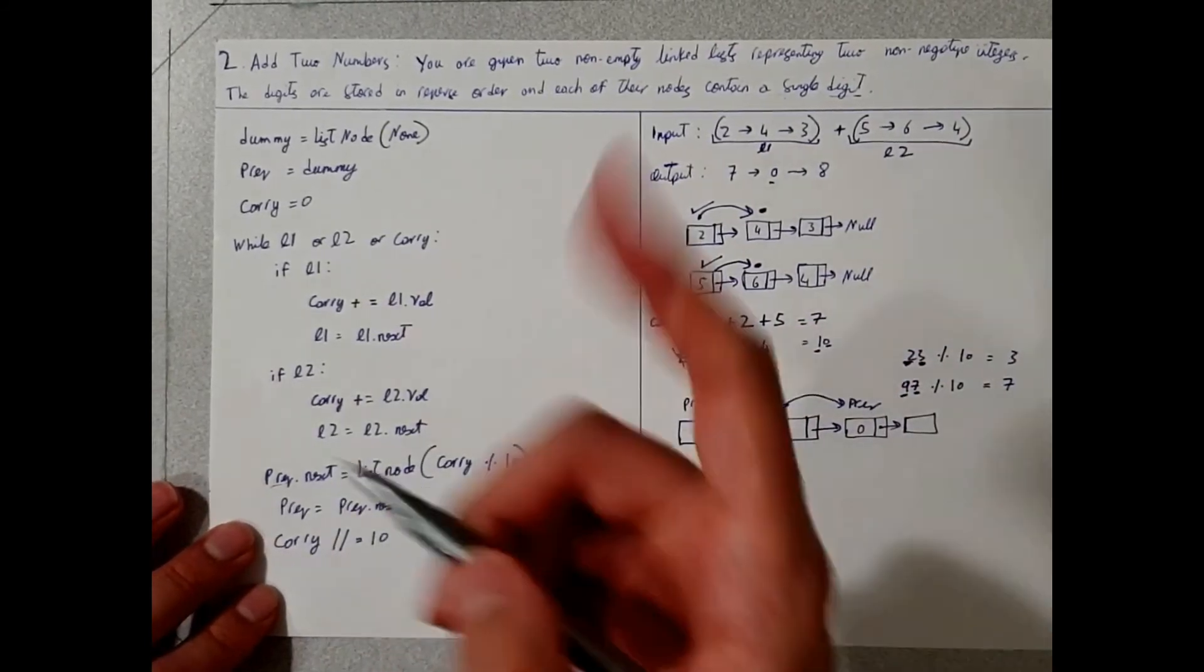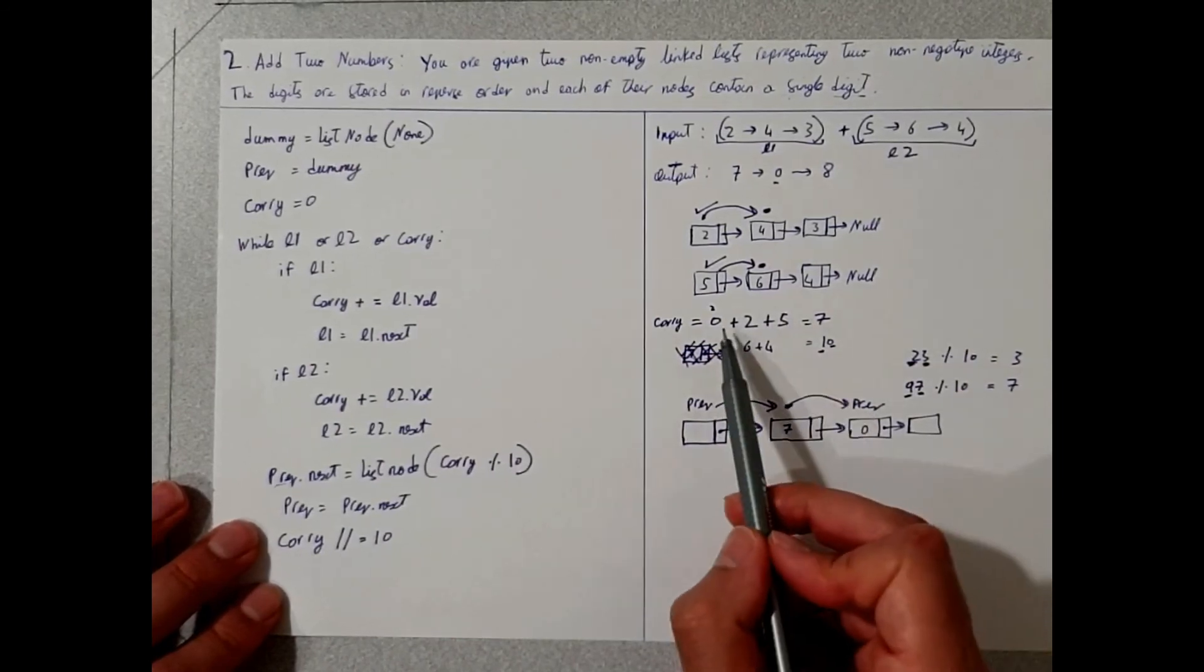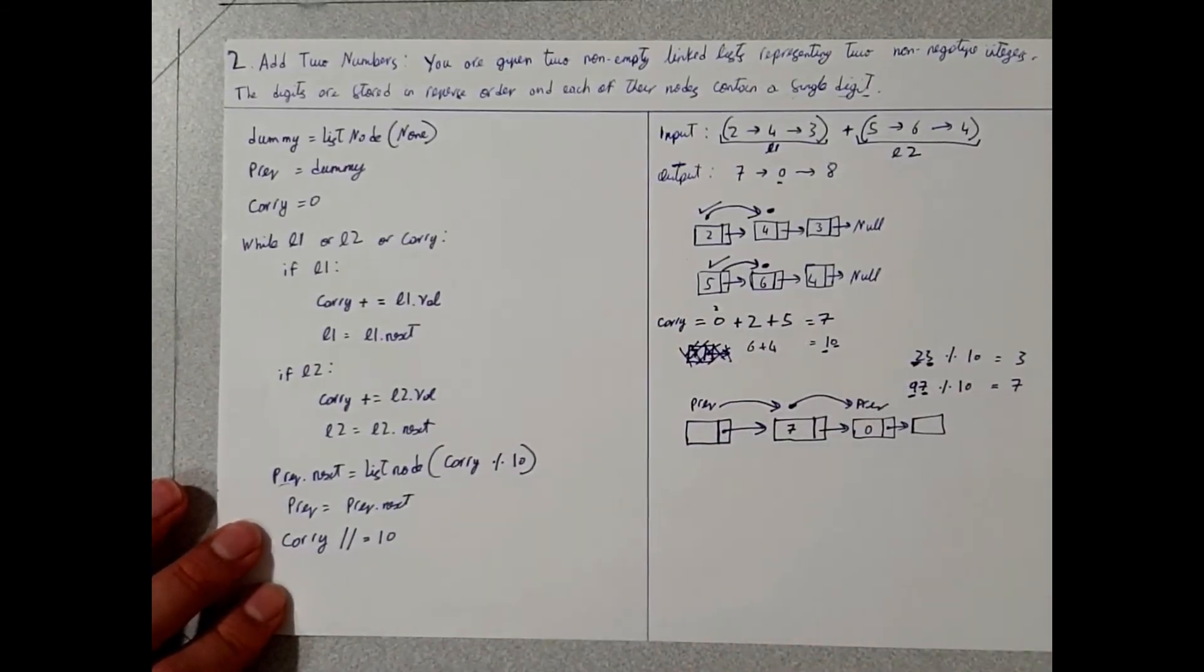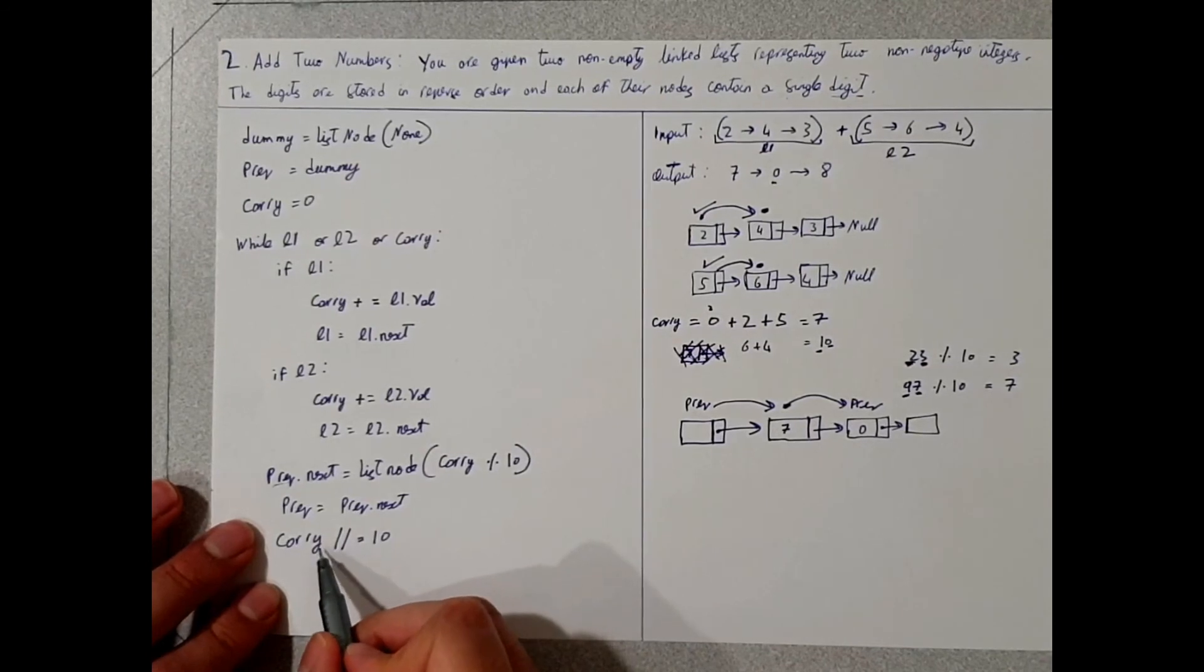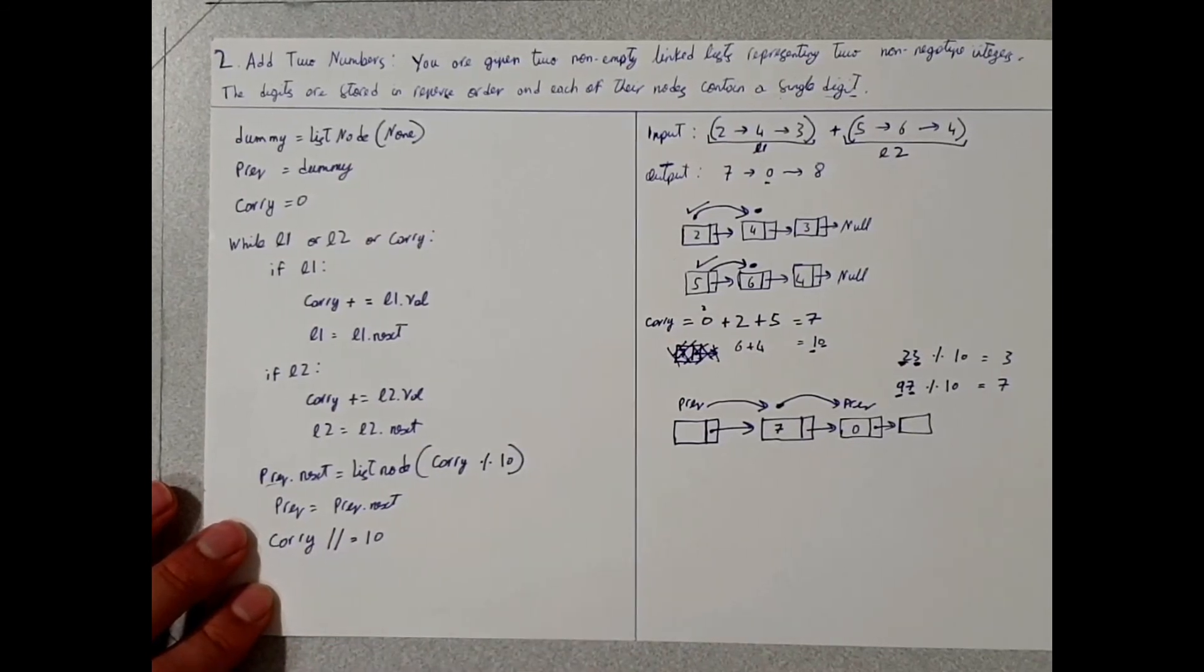So in the next loop, instead of it being zero, it's going to be 2, so it's carried onwards to the next. And then we add the next values and so on and so forth.